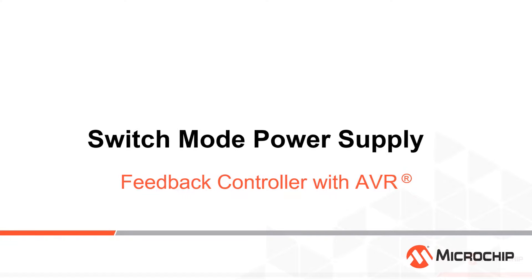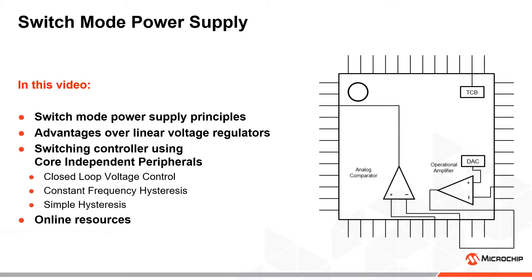We'll start by going over the fundamentals of switch mode regulation and compare these methods to linear voltage regulators. We'll then look at an implementation of a buck step-down converter using the core-independent peripherals of the AVR as the switching controller to eliminate the need for a dedicated controller IC.